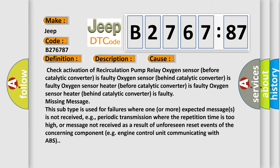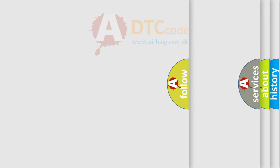Missing message. This subtype is used for failures where one or more expected messages is not received, e.g., periodic transmission where the repetition time is too high, or message not received as a result of unforeseen reset events of the concerning component, e.g., engine control unit communicating with ABS.